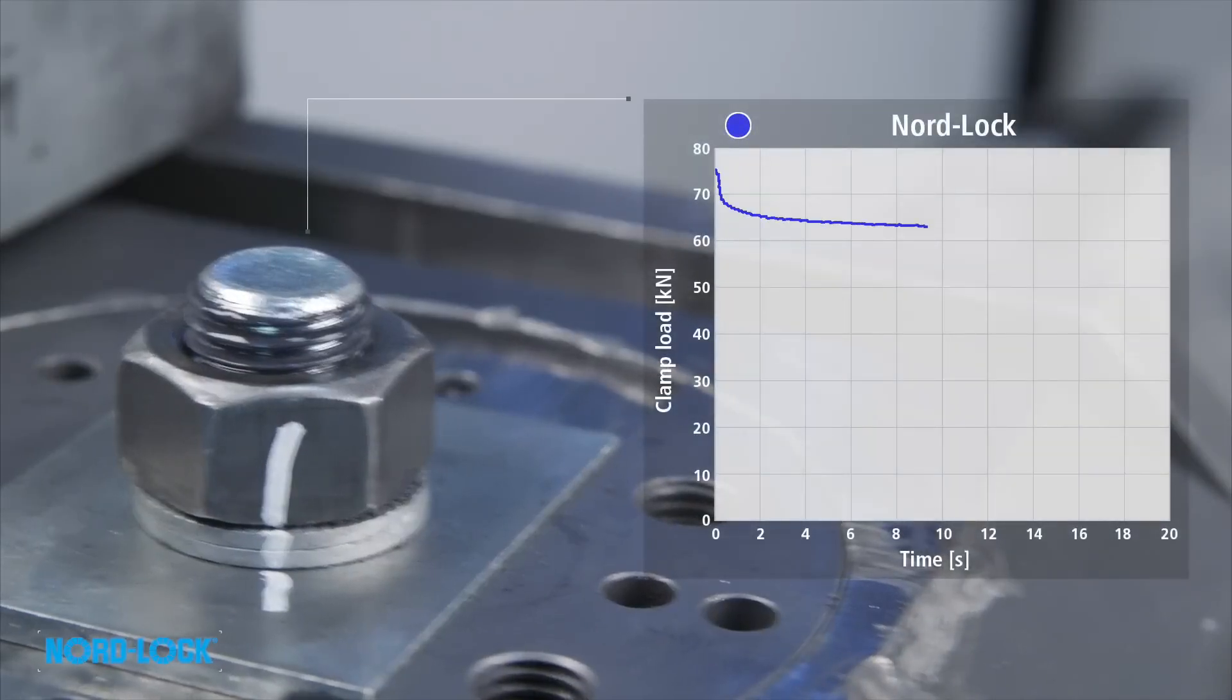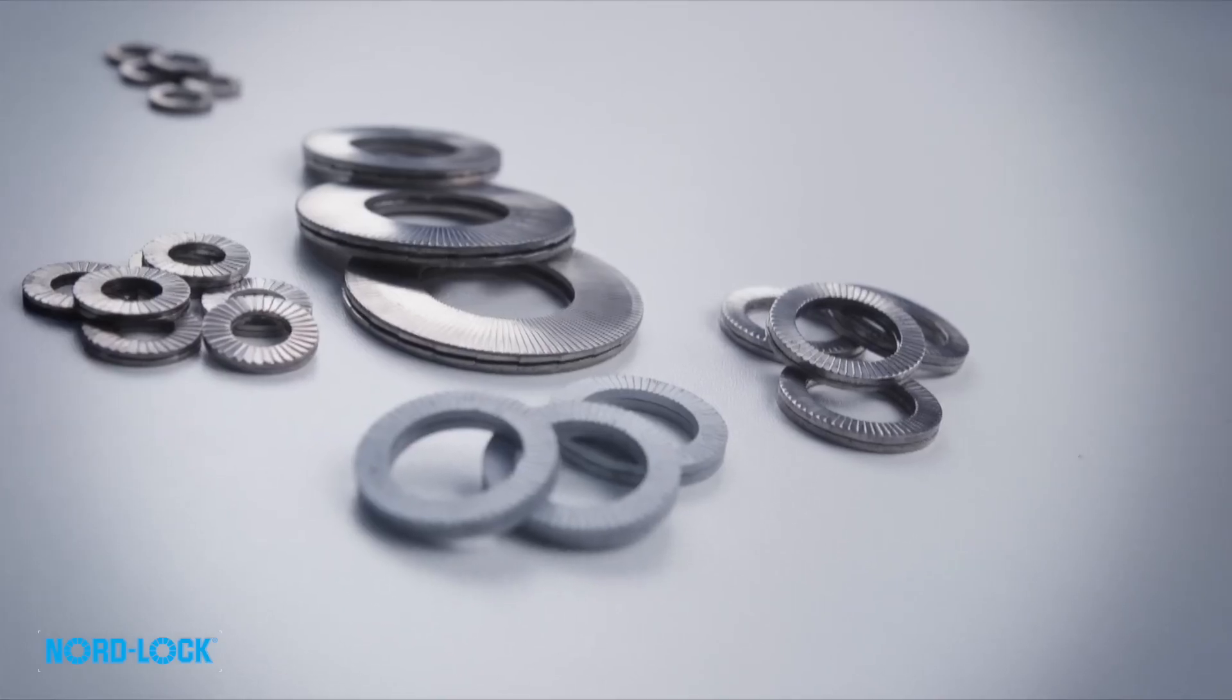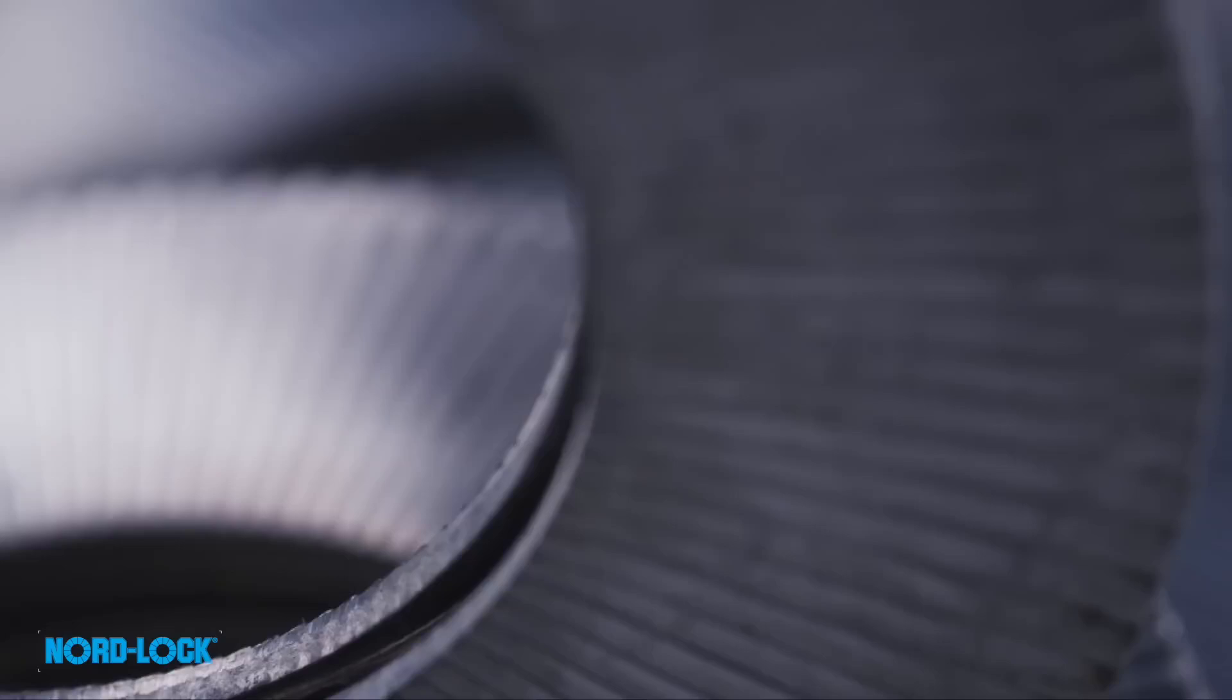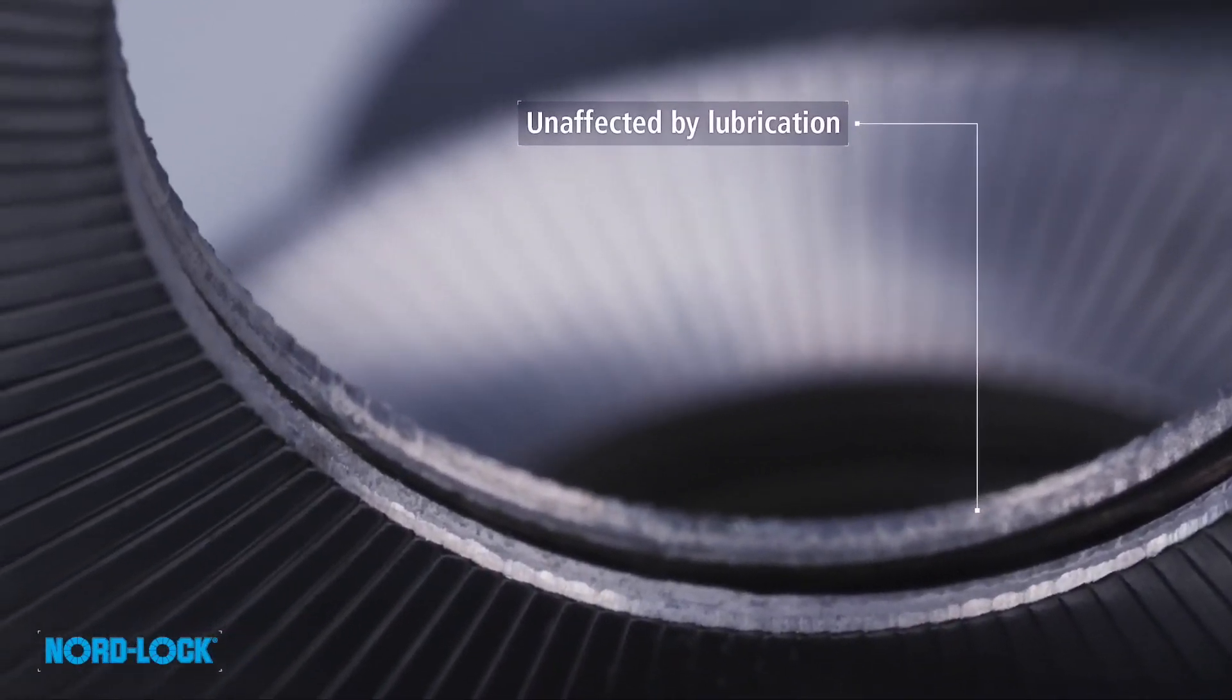After the initial settlements, a high and stable clamp load still remains. A second test continues to show that no unintentional rotation occurs. No re-tightening will be required. Since the Nord Lock wedge locking system is not dependent on friction, it is also unaffected by lubrication.